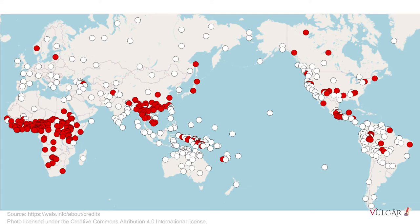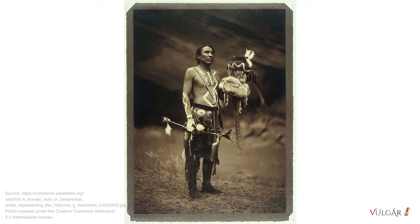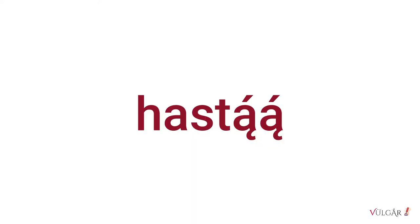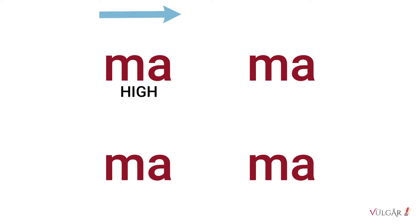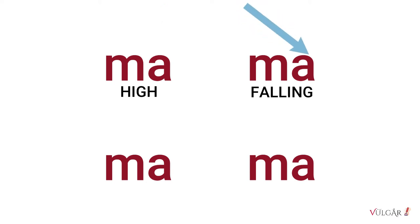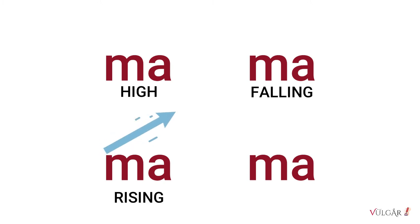There are various different tonal systems. For instance, Navajo has a simple high-low distinction, as we can hear in the word. Mandarin, on the other hand, has a more complex system. It has a high tone, a tone that starts high and falls down low, a tone that rises up to high, and finally a tone that falls and then rises, known as a contour tone.